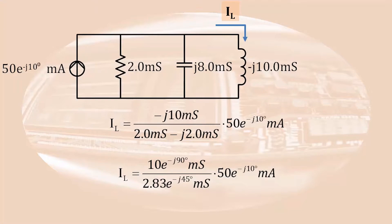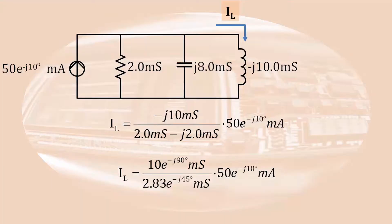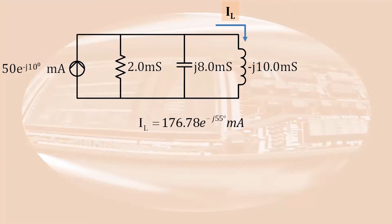Since multiplication and division are more easily performed in polar form, let's convert the rectangular expressions to polar form. Again, if you need a reminder, check the 6 minute mark of the complex number video. With the numbers in polar form, we can multiply and divide the magnitudes as shown, and add the angles in the numerator while subtracting the angle in the denominator. This results in an inductor current of 176.78e to the minus j 55 degrees milliamps.